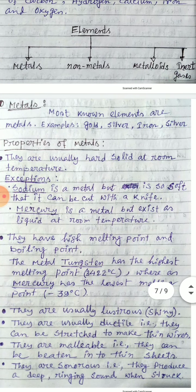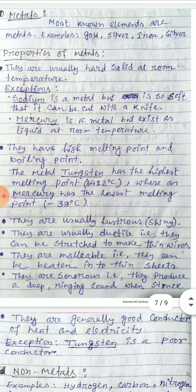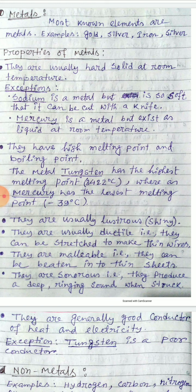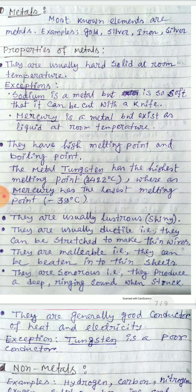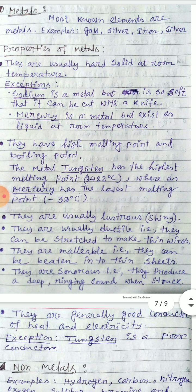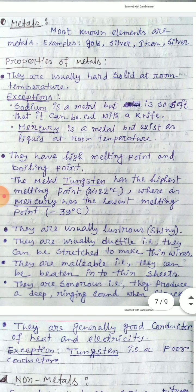Most known elements are metals — for example, gold, silver, iron, aluminium, and copper. Metals are generally very hard and solid at room temperature, although there are exceptions. Sodium is a metal but is a soft metal that can be cut with a knife. Mercury is a metal but exists as a liquid at room temperature.